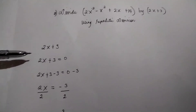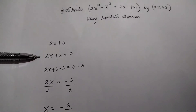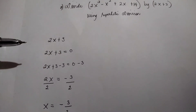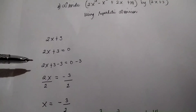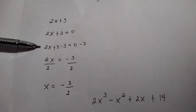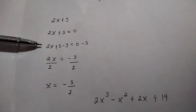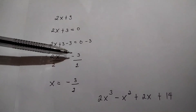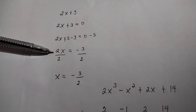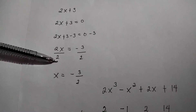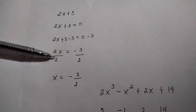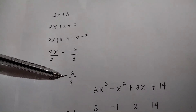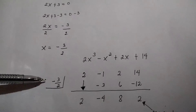Then equate the divisor to 0: that becomes 2x plus 3 equals 0. Take the additive inverse of 3, which is negative 3. Subtract both sides by 3: 2x plus 3 minus 3 equals 0 minus 3. 3 minus 3 is 0, giving 2x. 0 minus 3 is negative 3, so 2x equals negative 3. Divide both sides by 2: x equals negative 3 over 2. Write negative 3 over 2 here.